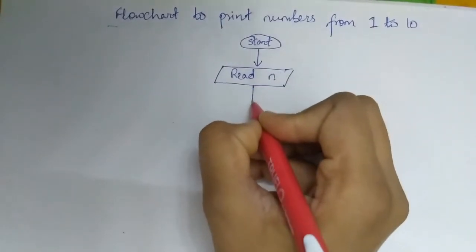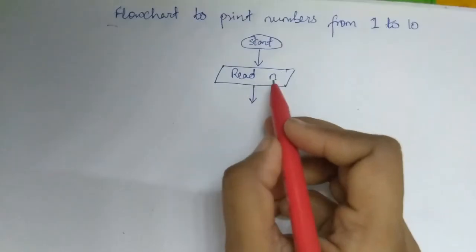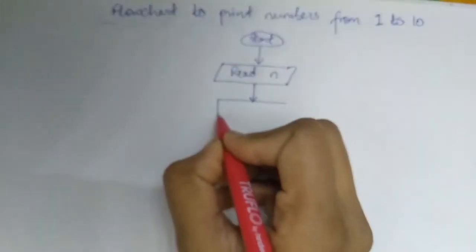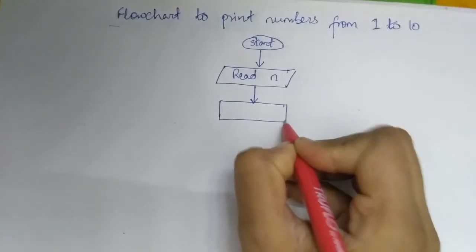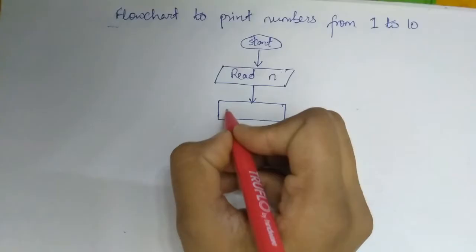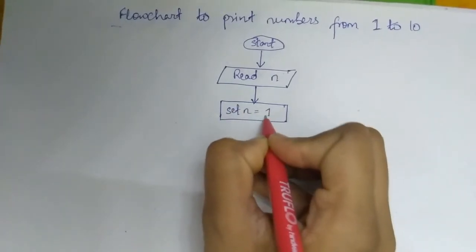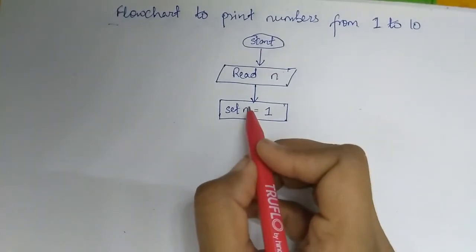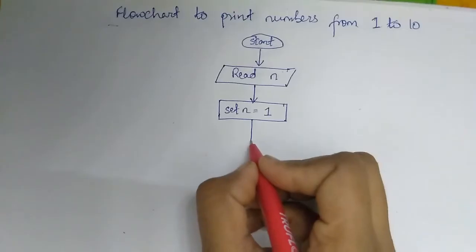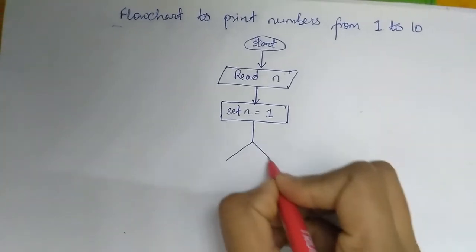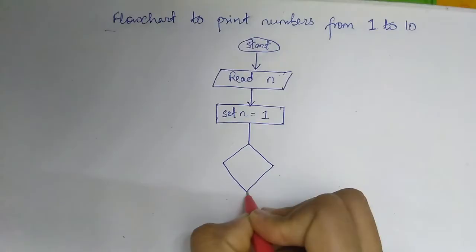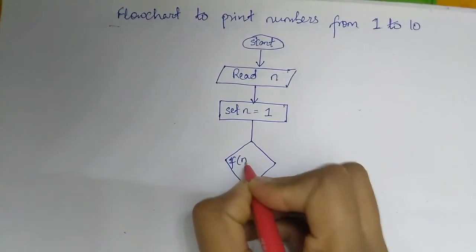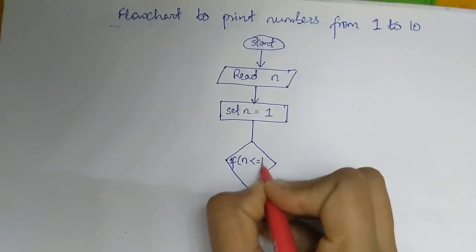After this process we will initialize the value of n equals to 1. To do this we will use a process box: set n equals to 1. After this we will check the condition whether n is less than 10 or not using a decision box of diamond shape if n is less than or equals to 10.